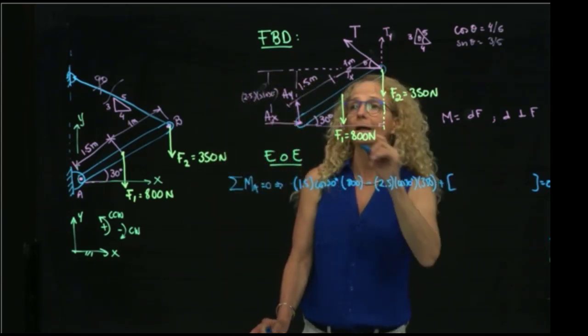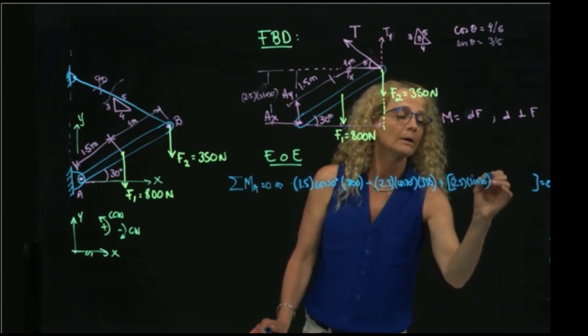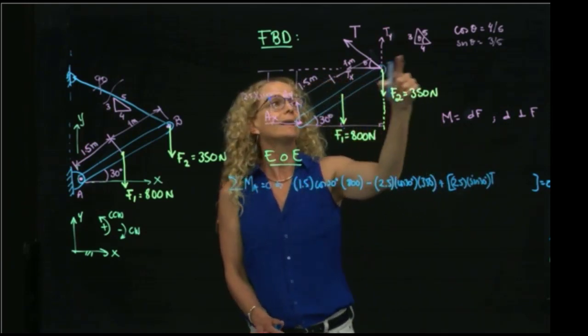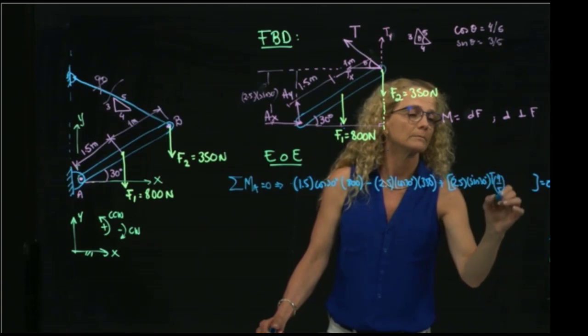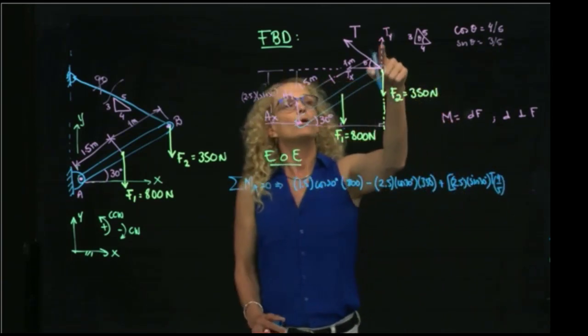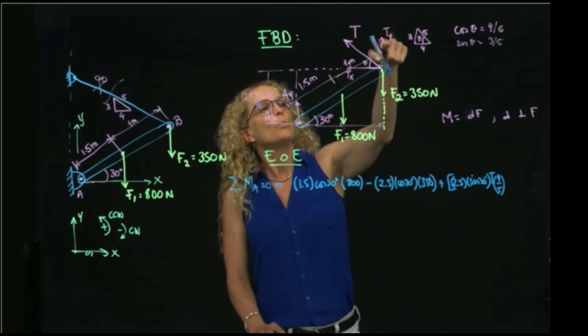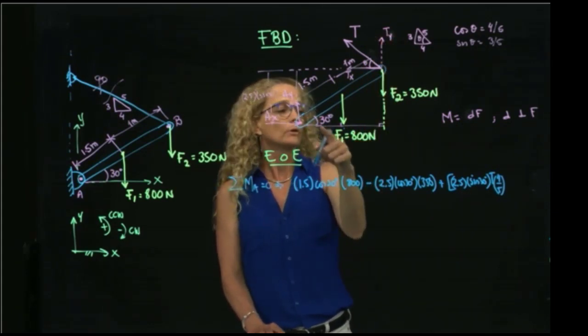Okay, so I have 2.5 sine of 30, tension, and in x we say that we multiply by 4/5. And then we have the moment produced by Ty.